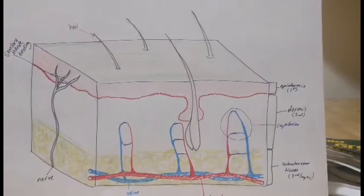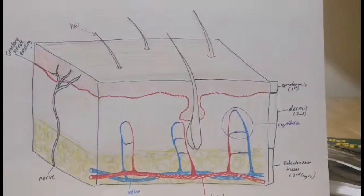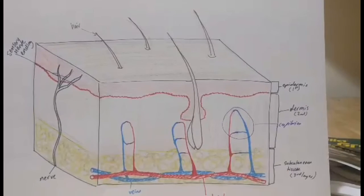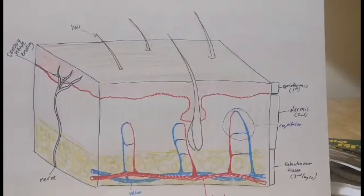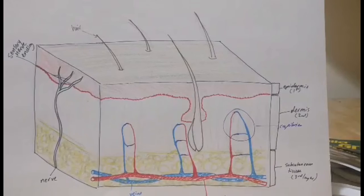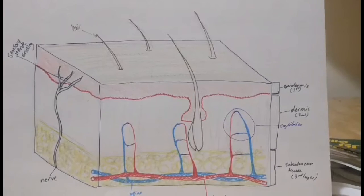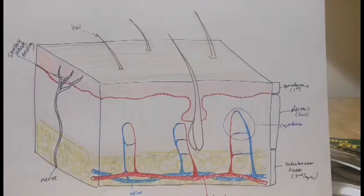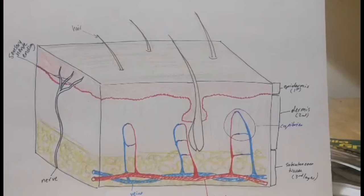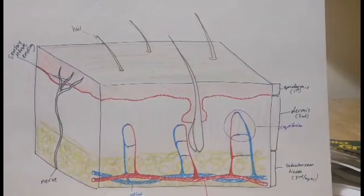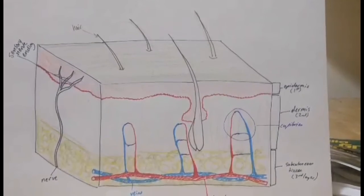If you have blisters forming, you want to make sure they stay intact, because if they pop, that's another opening for bacteria to get into your body and cause infection. So the biggest thing is to cool the skin to prevent further burning, keep a nice lint-free dressing on over top to prevent infection, and seek medical care for serious burns.